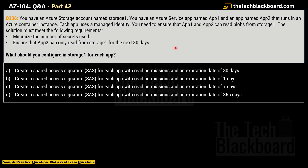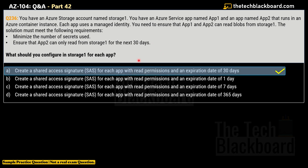The correct answer is Option A. To allow App 1 and App 2 to read blobs from Storage 1, you create a shared access signature (SAS) for each app with read-only permissions. Since App 2 should only have access for the next 30 days, you set the SAS expiration date to 30 days — that is why Option A is the correct answer.